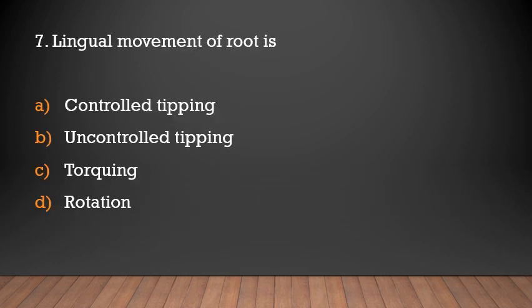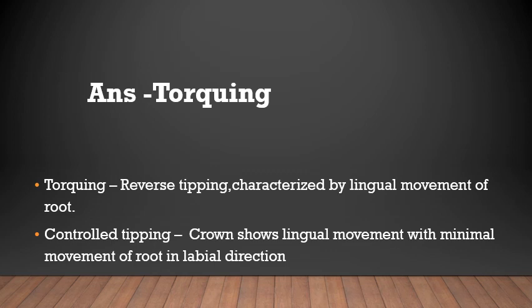Lingual movement of the root is associated with torquing. Torquing is reverse tipping and is characterized by lingual movement of the root. In case of controlled tipping, the crown shows lingual movement with minimal movement of the root in the labial direction.